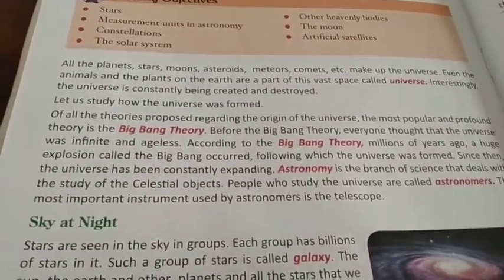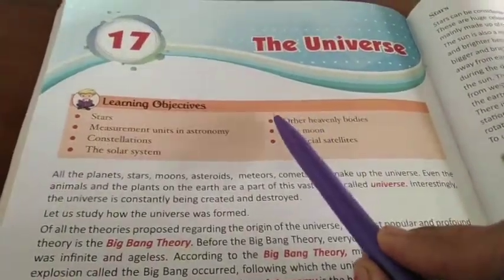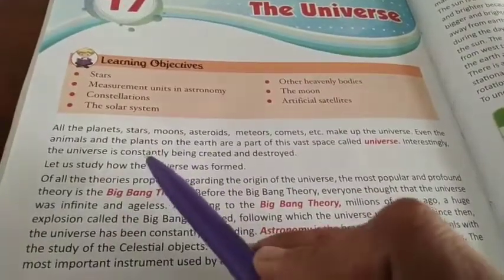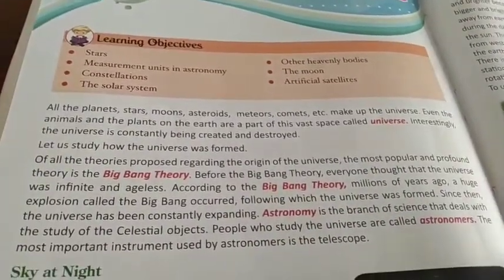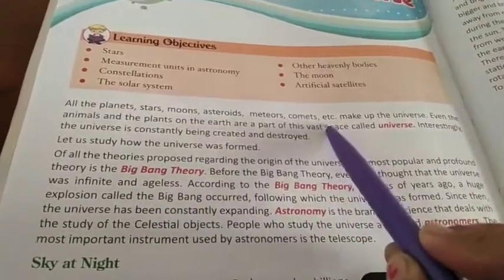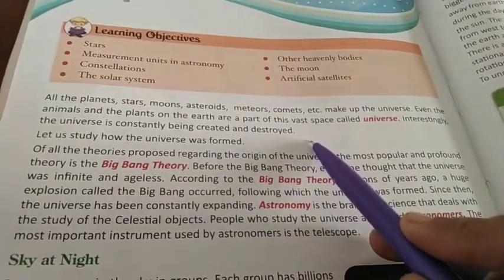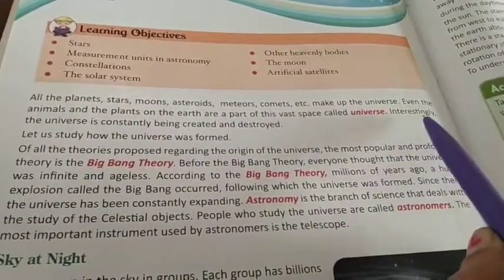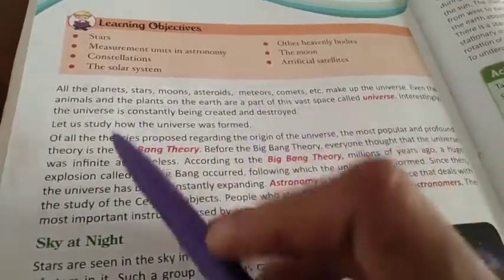Hello students, today we start Class 8, Chapter 17: Universe. All the planets, stars, moons, asteroids, meteors, comets, etc. make up the universe. Even the animals and plants on the earth are a part of this vast space called the universe. Interestingly, the universe is constantly being created and destroyed.